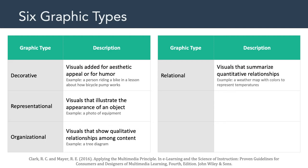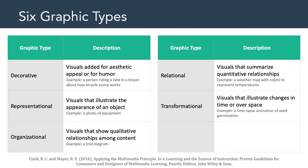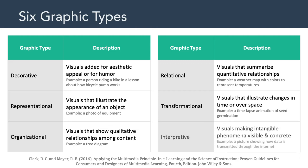The fourth graphic type is relational, and these are visuals that summarize quantitative relationships. An example of a relational graphic would be a weather map with colors used to represent different temperatures. A fifth graphic type is transformational — visuals that illustrate changes in time or over space, such as a time-lapse animation of a seed germinating. The sixth and final type is interpretive, and these are visuals that make intangible phenomena visible and concrete. An example might be a picture showing how data is transmitted through the internet, something we can't really see in the real world because it is too small.